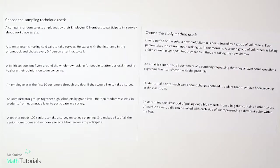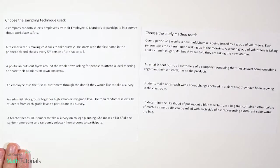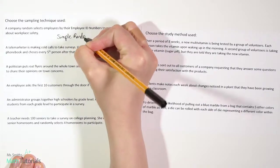Let's look at some practice examples now. We want to choose the sampling technique used for each example, choosing from that first column of sampling techniques. A company randomly selects employees by their employee ID numbers to participate in a survey about workplace safety. They're just randomly picking ID numbers without looking at who they belong to — that would definitely be a simple random sample.